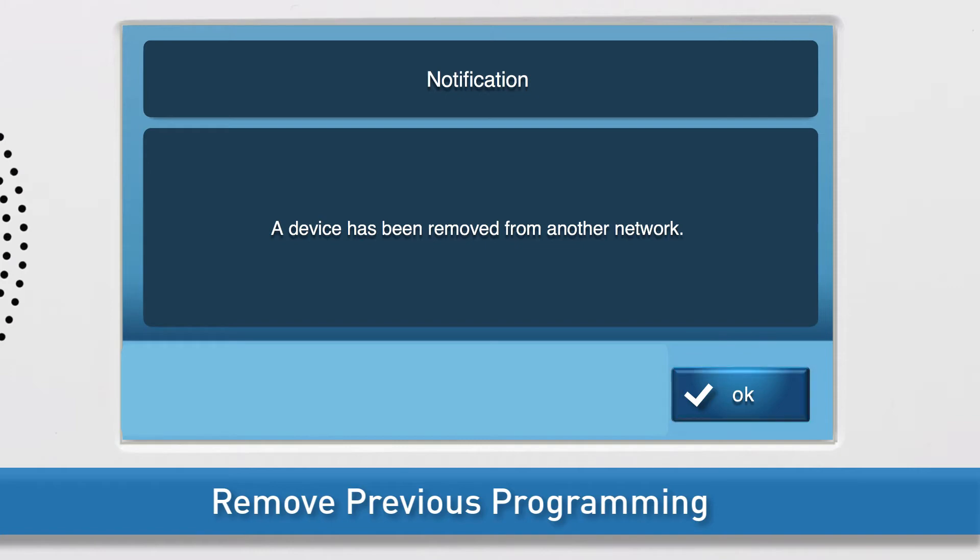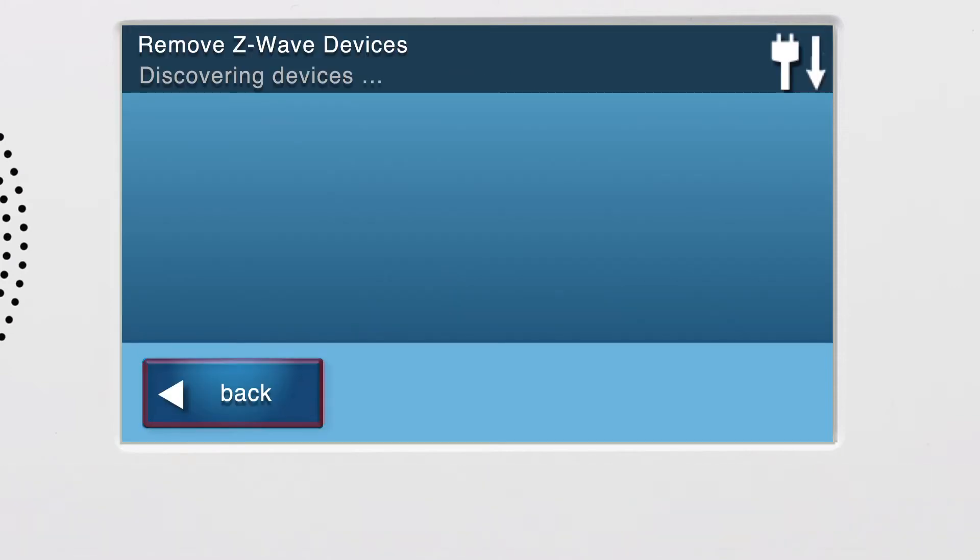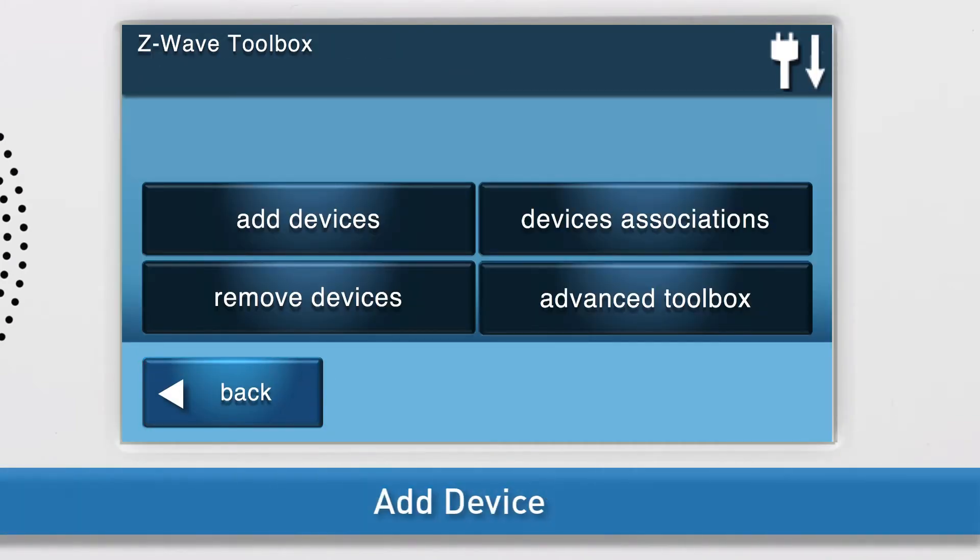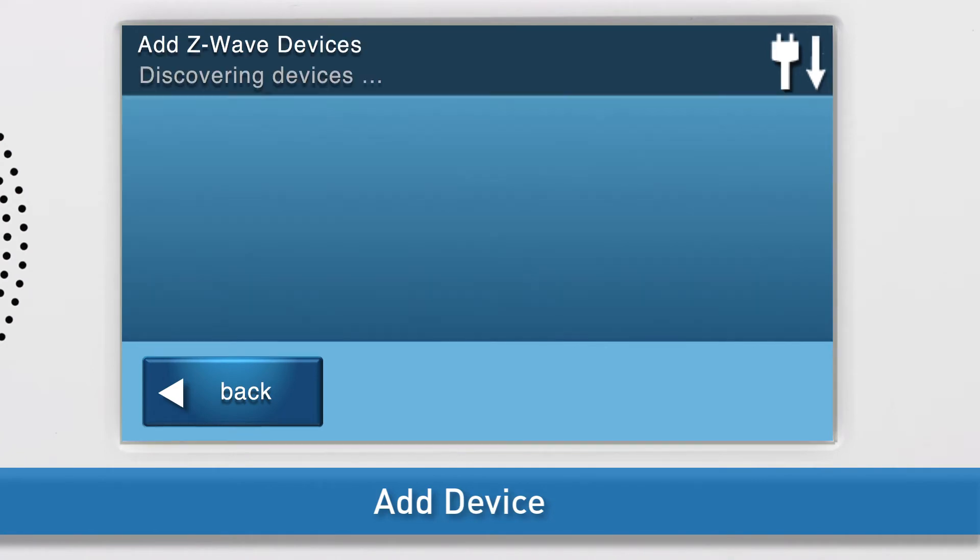Press OK, then press Back. Now you can add the Lamp Module. Press Add Devices. The Add Z-Wave Devices screen will appear.